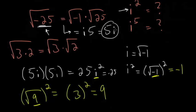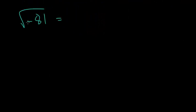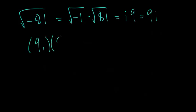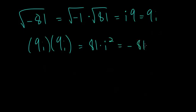So 5i is indeed the square root of negative 25. Now let's do a second example: the square root of minus 81. We break this up into the square root of minus 1 times the square root of 81. The square root of minus 1 is i, and the square root of 81 is 9, so this is 9i. We can verify: 9 times 9 is 81, and i times i is i squared, which is negative 1, giving us minus 81 — exactly what we expected.